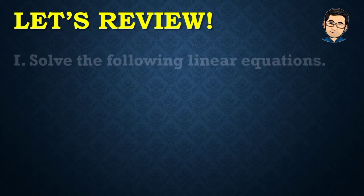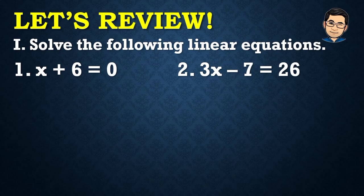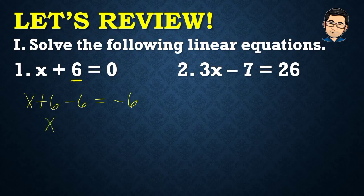Before we start our discussion, let's have a review. Our first review is about solving linear equations. When we say linear equation, the degree — the highest degree — is one. For number one, we have x plus six equals zero. To solve this, we subtract six from both sides: x plus six minus six equals negative six. We do this so that only the variable x remains on the left side. Therefore, the value of x is negative six.